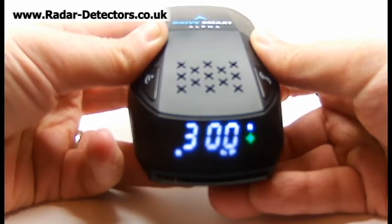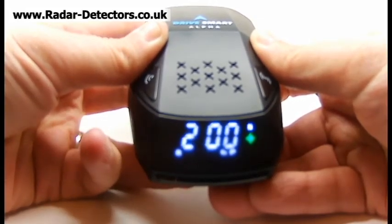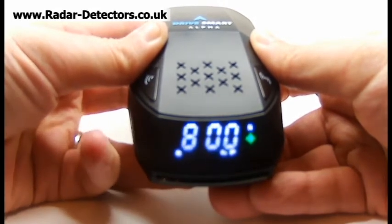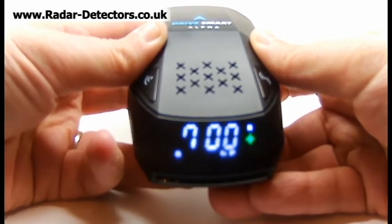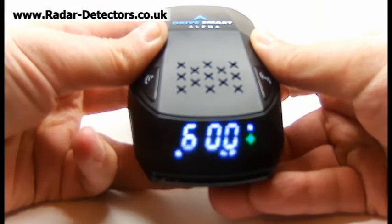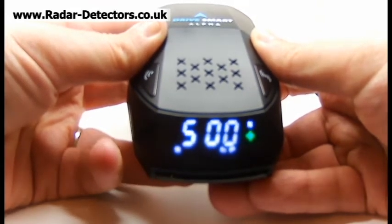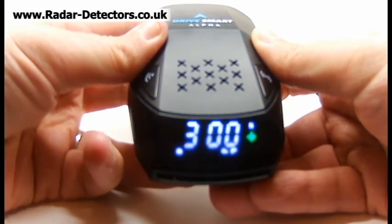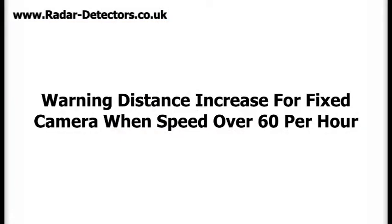Warning distance can be set from 200 metres up to 800 metres, with options including 300, 400, 500, 600, 700, and 800 metres. Warning distance increase for fixed camera when speed is over 60 miles per hour can be turned on or off.